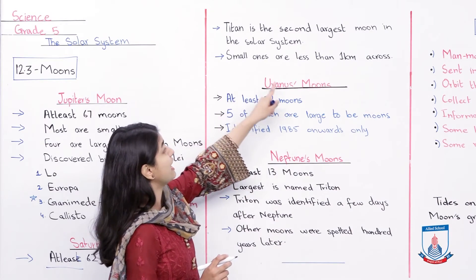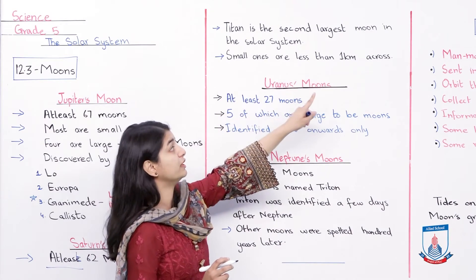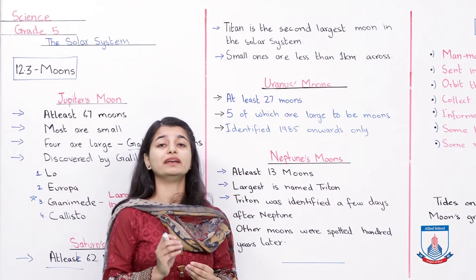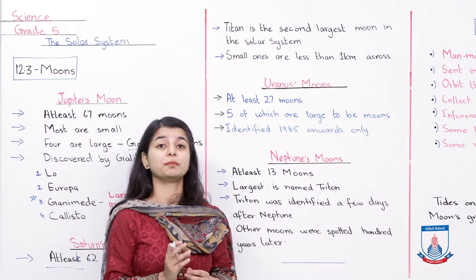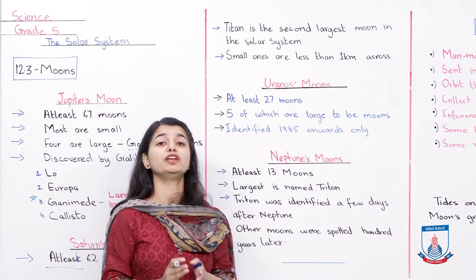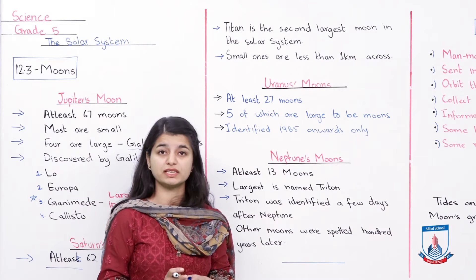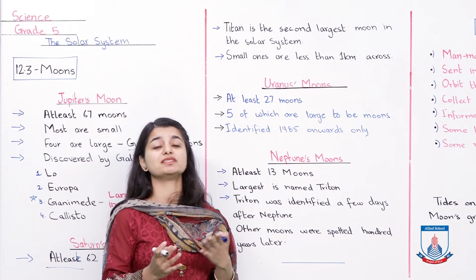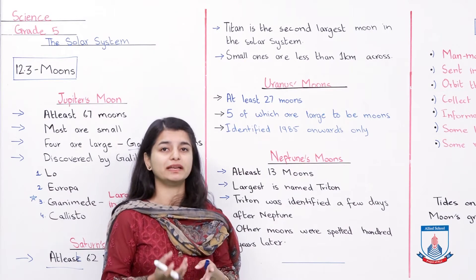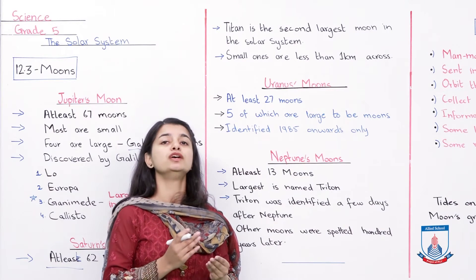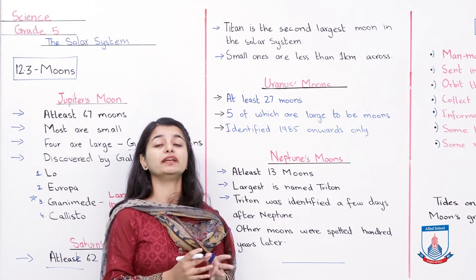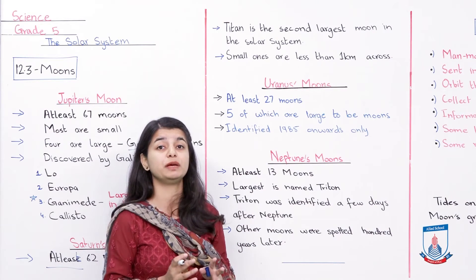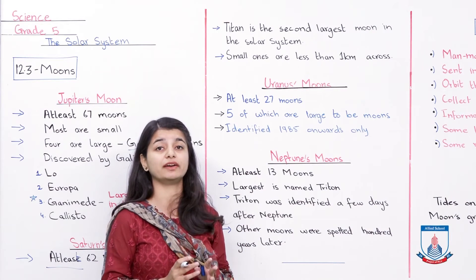Small ones are less than one kilometer across. Jabke jo chhote waale hain, wo taqreeban one kilometer across tak bhi hain. One kilometer bohot hi chhota distance hota hai — if I travel in this room, woh bhi one kilometer se zyadha at some point ban jayega. So that's why one kilometer ke moon ka matlab ye hai ke bohot hi small size moons bhi present hain in Saturn.